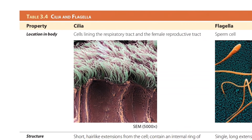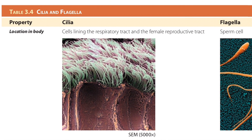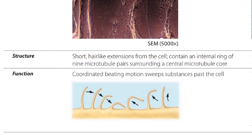Cilia location in the body: cilia are present in cells lining the respiratory tract and the female reproductive tract. Their structure consists of short hair-like extensions from the cell containing an integral ring of nine microtubule pairs surrounding a central microtubule core. Their function is coordinated beating motion that sweeps substances past the cell.